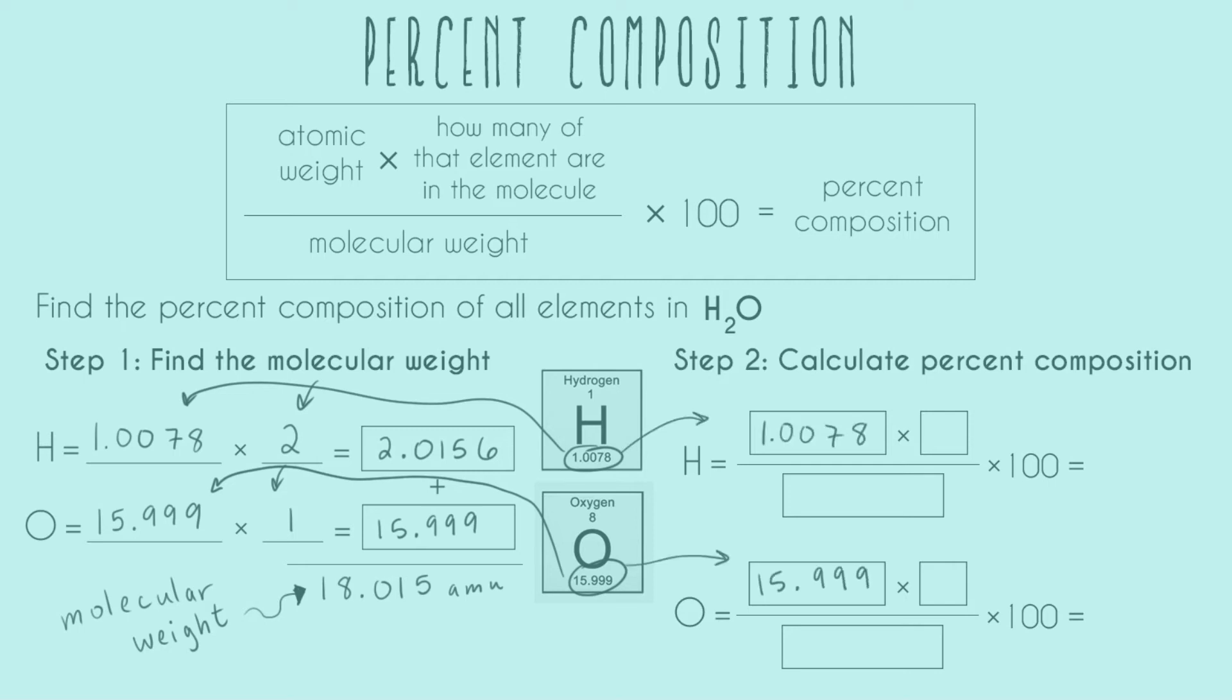Then we need how many of each element we have in the molecule. This is still back to the subscripts - for H we have a subscript of 2, and for oxygen we have no visible subscript, which means 1. Now our denominator is the molecular weight that we got from step 1, so we can plug that into both.